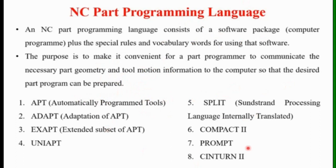There are few languages available. First, APT — Automatically Programmed Tool. Similarly, ADAPT — Adaptation of APT. Then EXAPT — Extended Subset of APT. UNIAPT is there. SPLIT — Substandard Processing Language Internally Translated. Similarly, Compact II is there, then PROMPT, and SYNTURN II. These are some of the Computer Programming Languages available. We will see APT — Automatically Programmed Tools — in detail in this lecture.